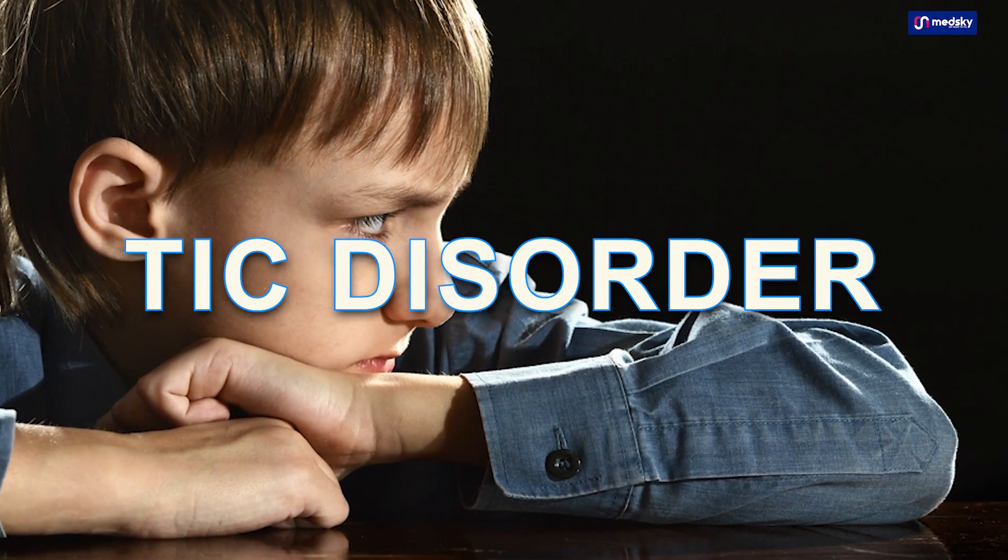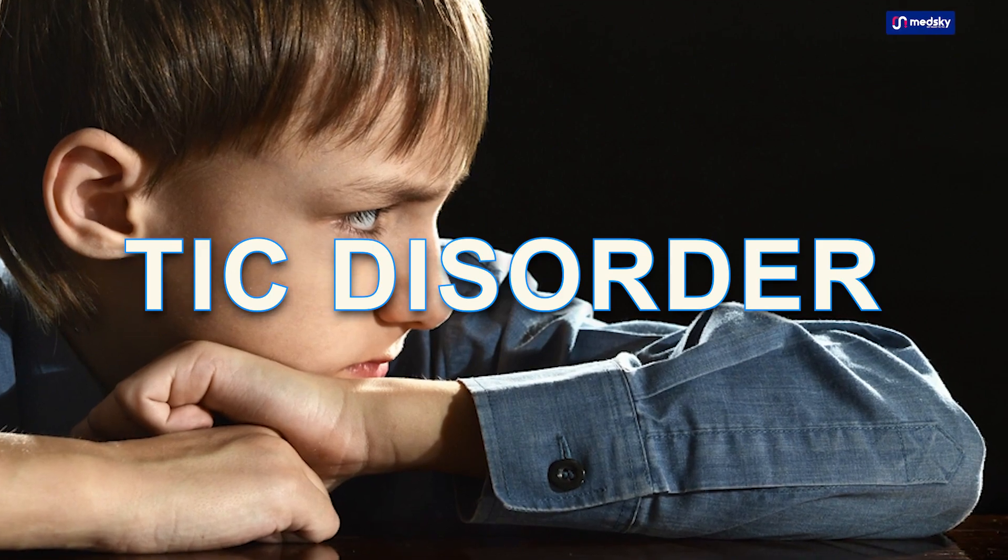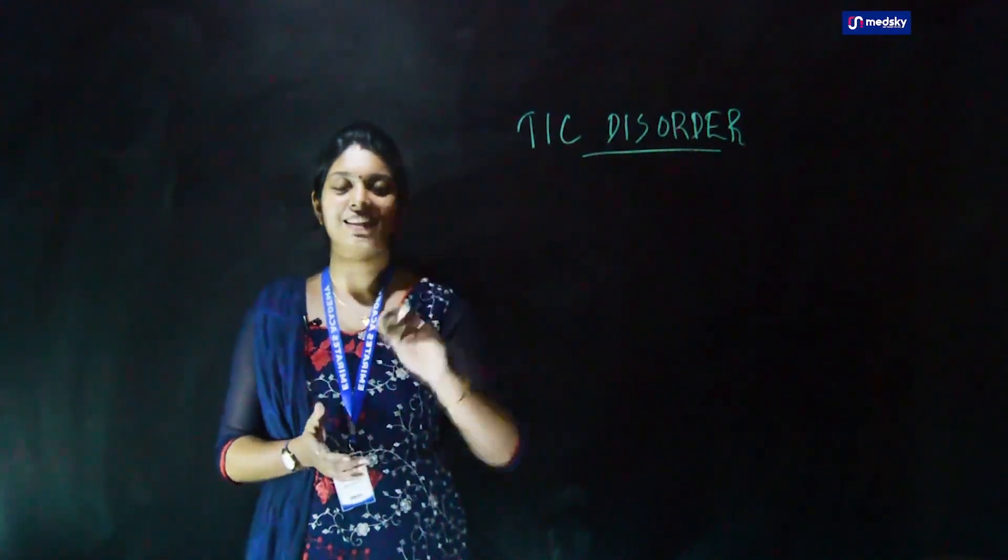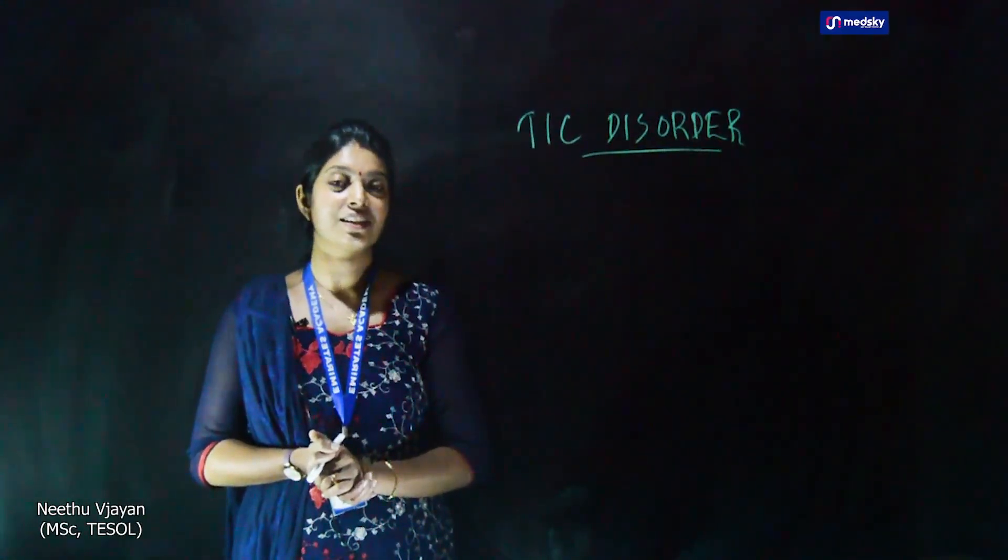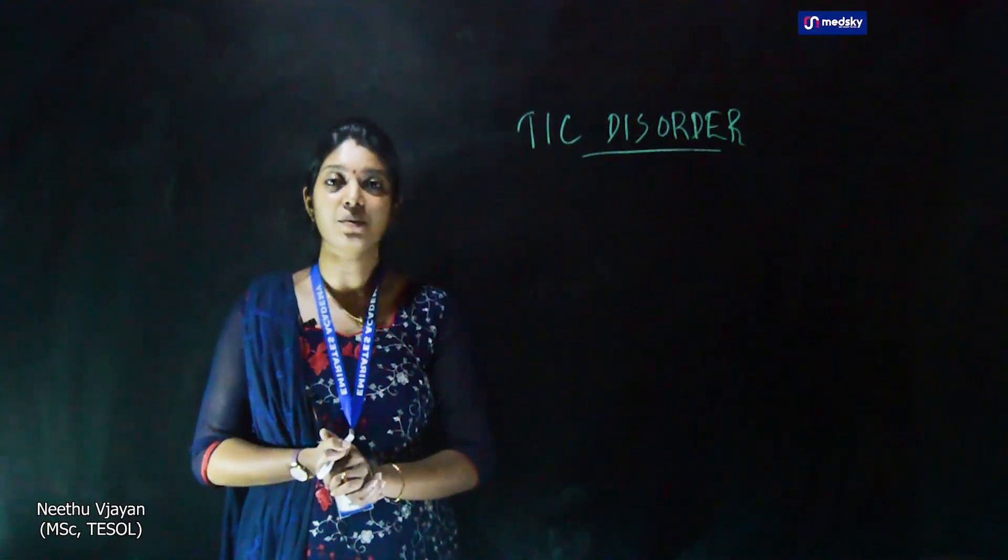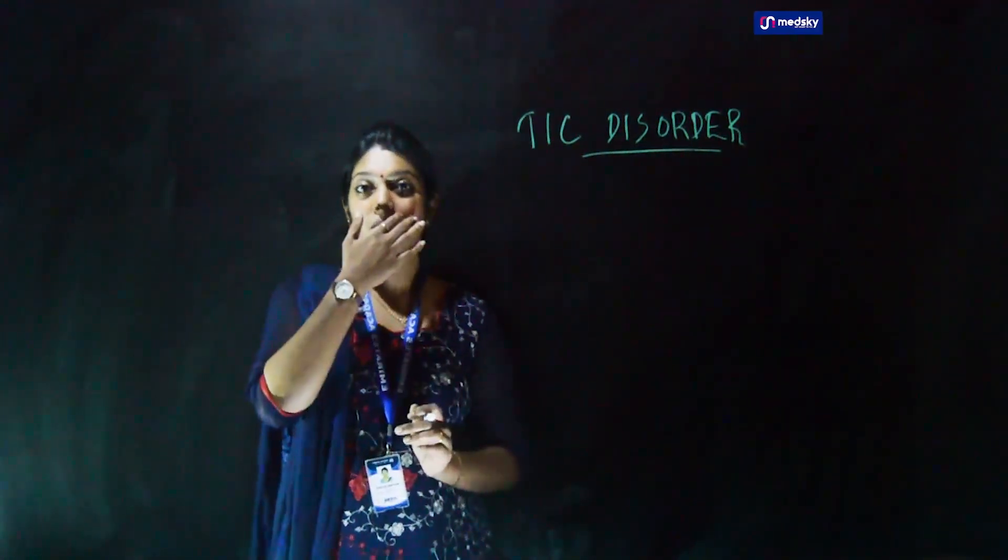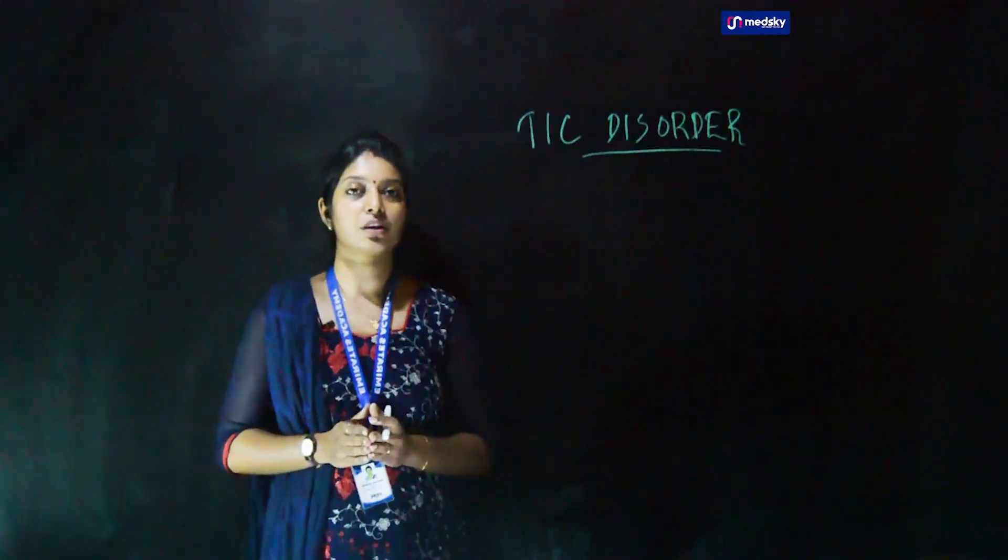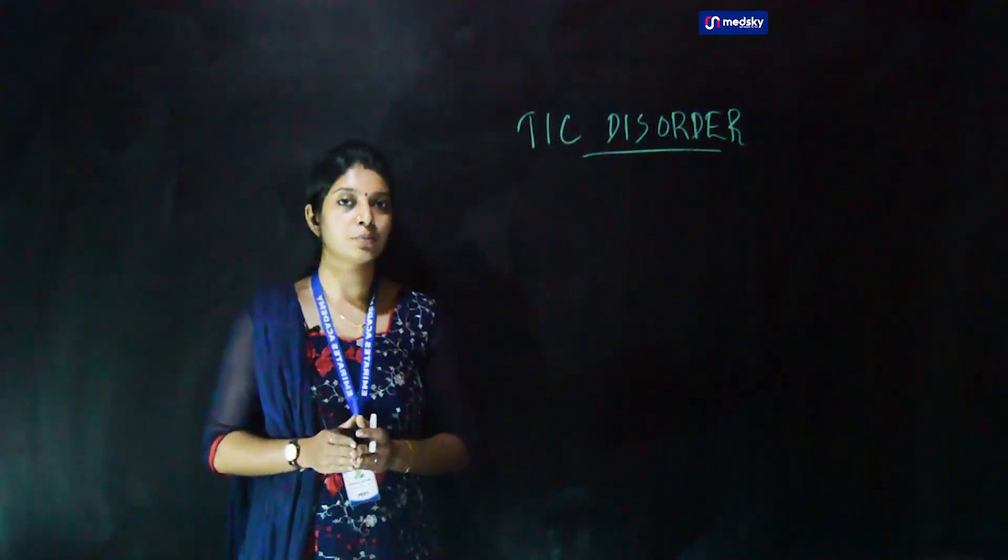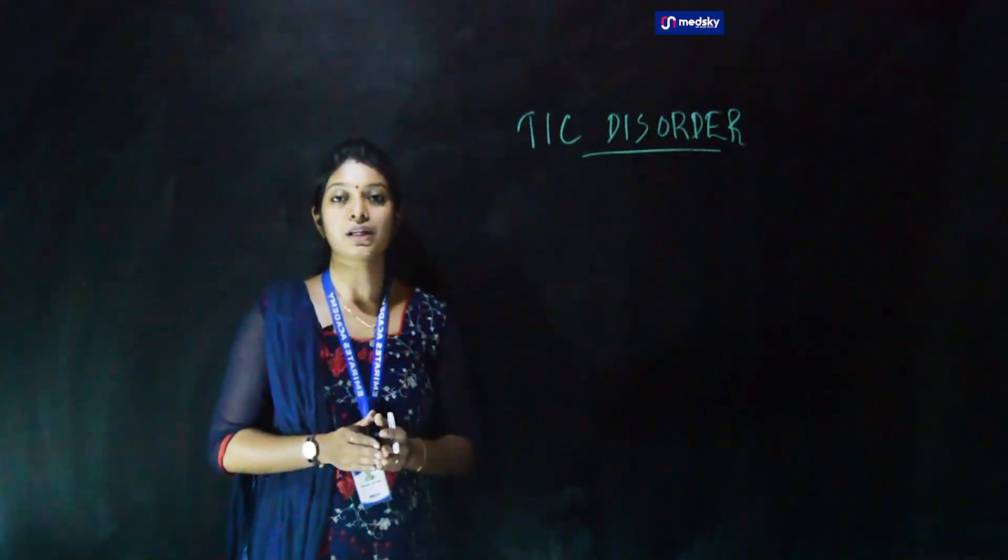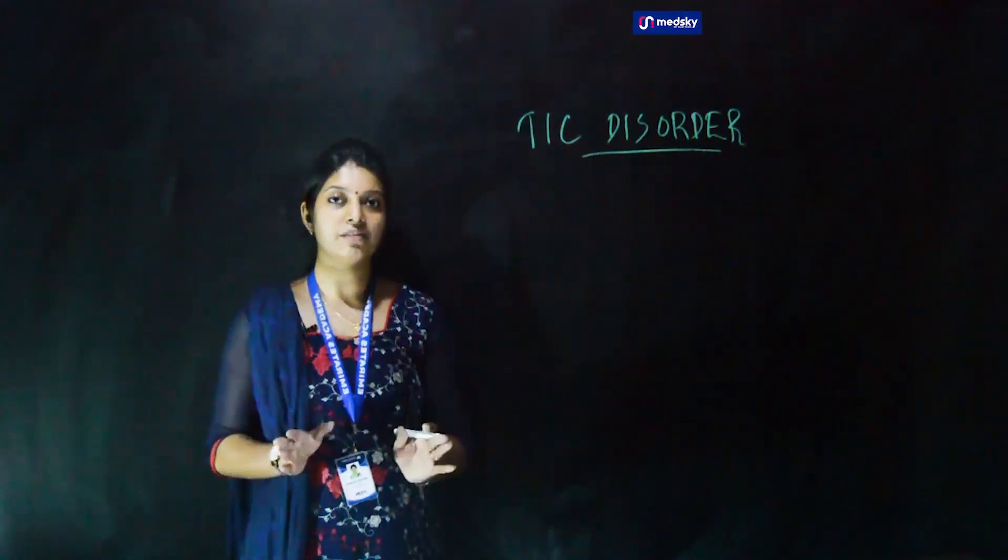Let's start with another disease condition, that is tic disorder. Tic disorder is uncontrollable, unwanted, involuntary repetitive movements of the muscles that can occur anywhere in the body.